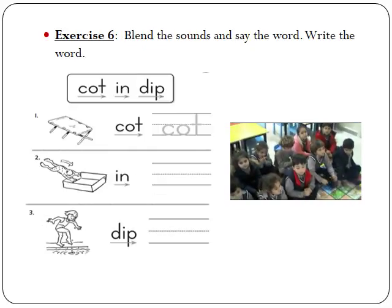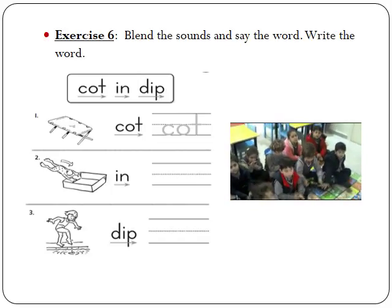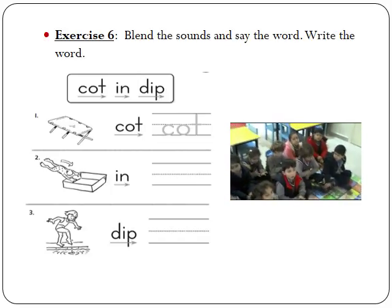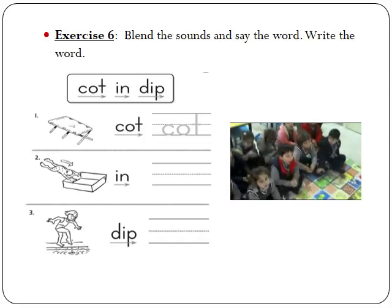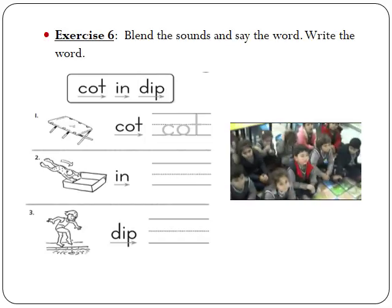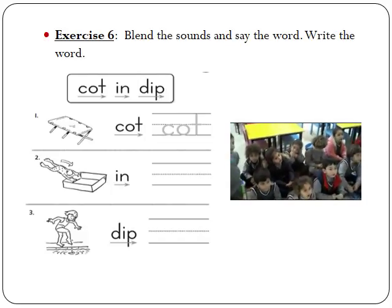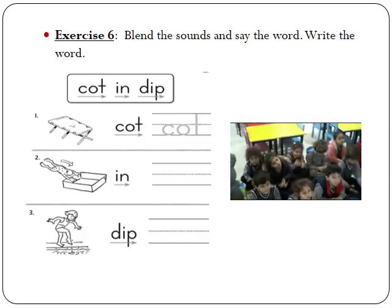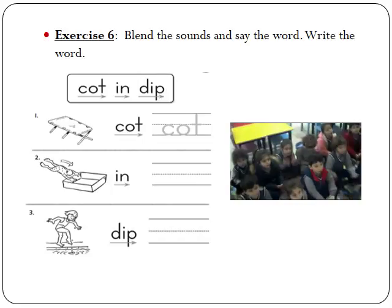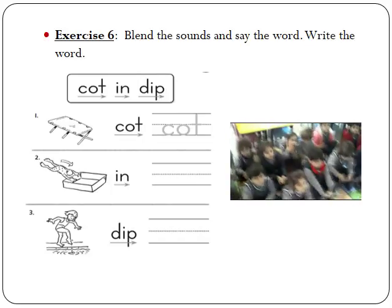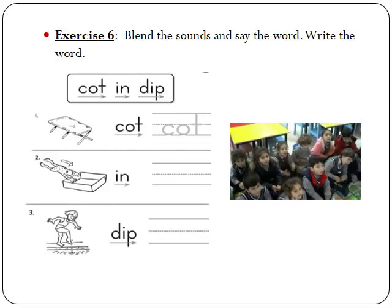Now let's move to the last exercise, exercise number six. We have to blend the sounds and say the word, then write the word in the space given here. Okay, let's see. Let's blend them together. O-T, cot. This is a cot. So I write letters C, O, and T.